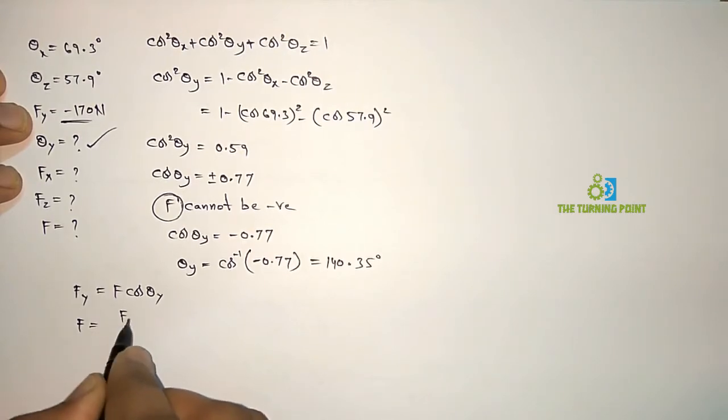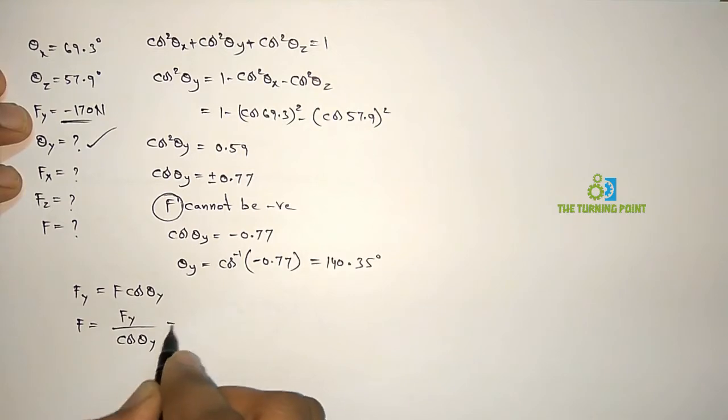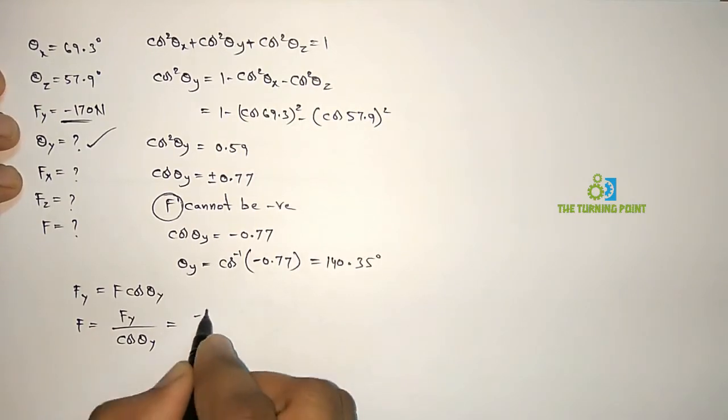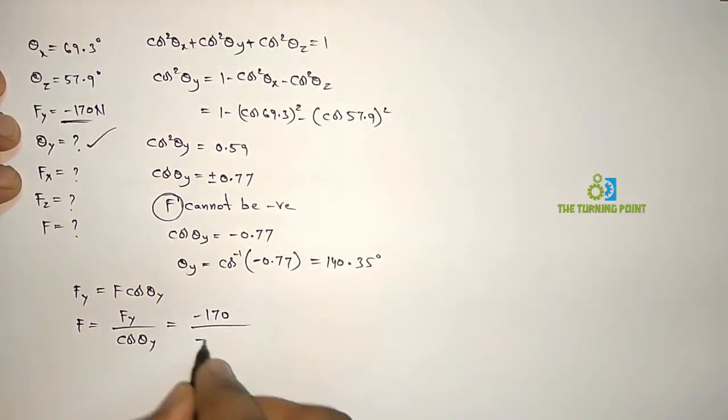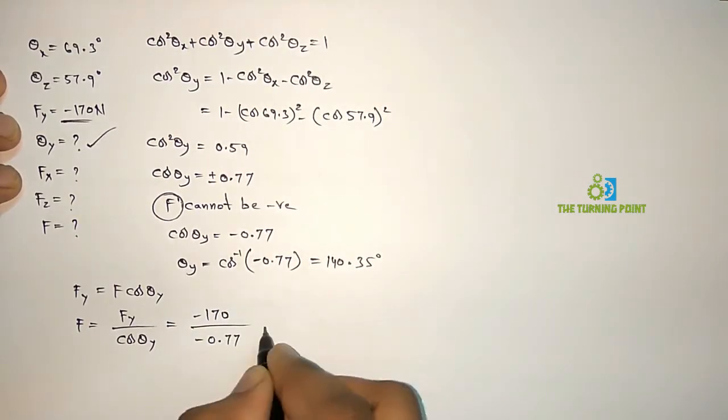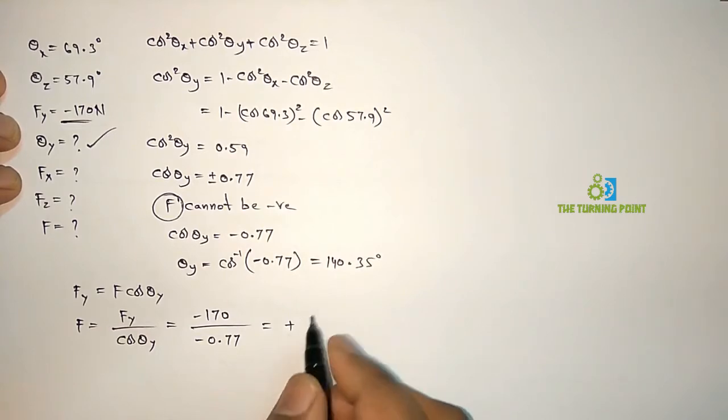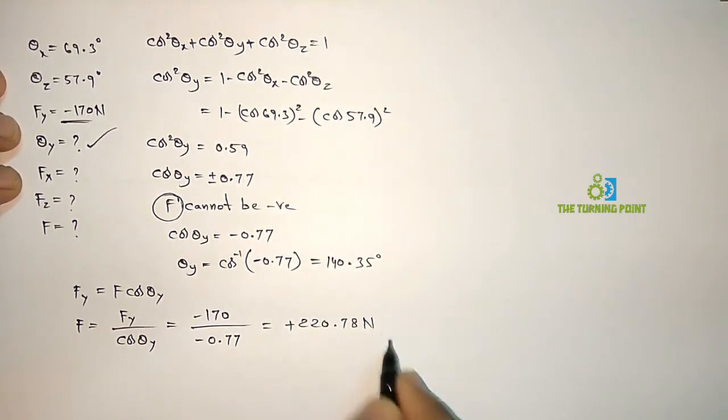F is equal to Fy by cos Theta y. Fy is given as minus 170 N, and cos Theta y just now we got that one as minus 0.77. So if we simplify it, minus minus, so it is plus. You will get 220.78 N. So this is the value of force F.